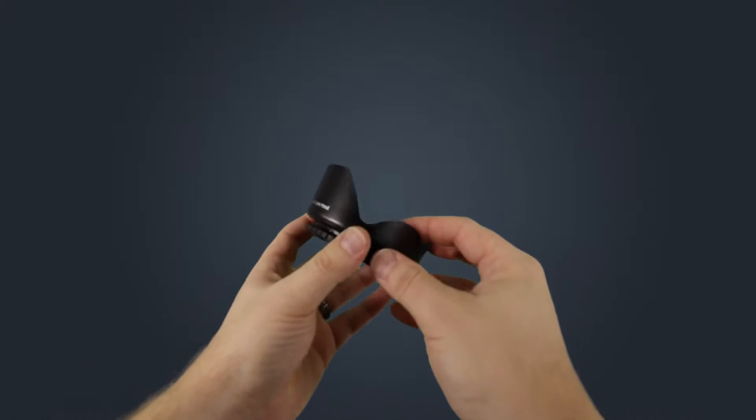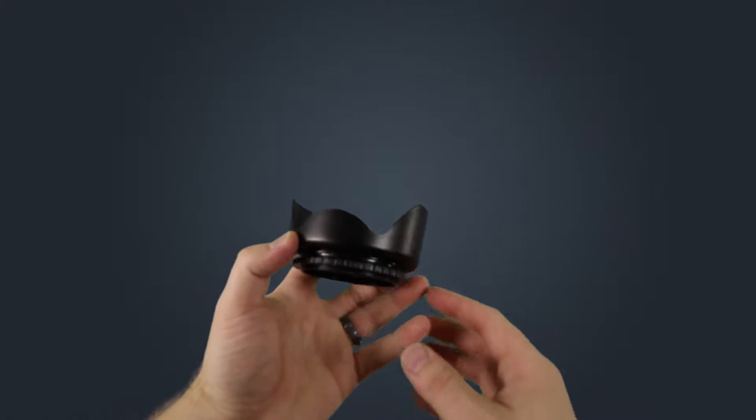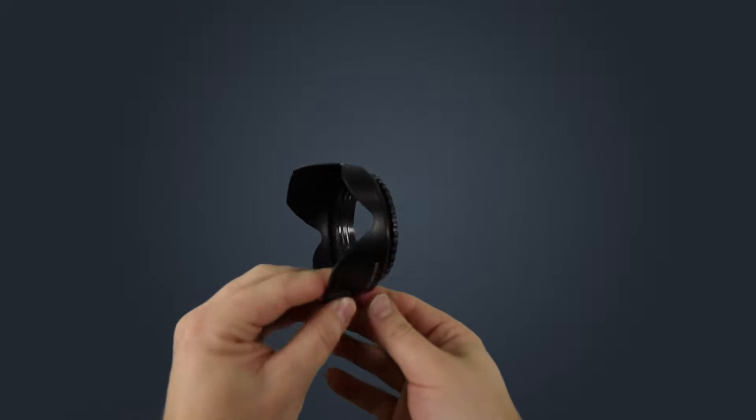Today, let's talk about the Goja 67mm Reversible Flower Lens Hood. This universal lens hood fits a number of Canon and Nikon camera lenses that have a 67mm lens filter attachment.